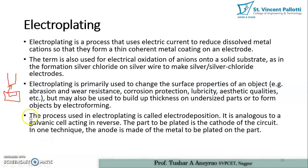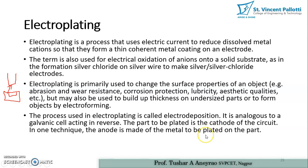The process used in electroplating is called electro deposition — meaning depositing cations on the anode. The part to be plated is the cathode of the circuit. Whatever we want to plate on the surface, that is kept as the anode, which is the negatively charged electrode. In one technique, the anode is made of the metal to be plated on the part.